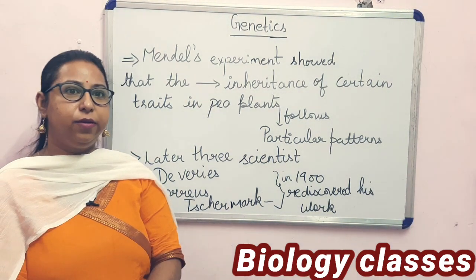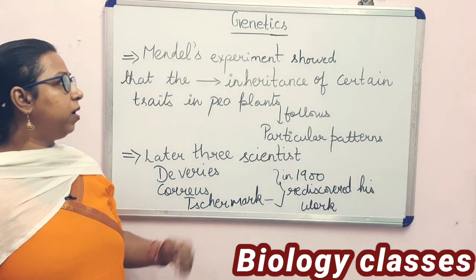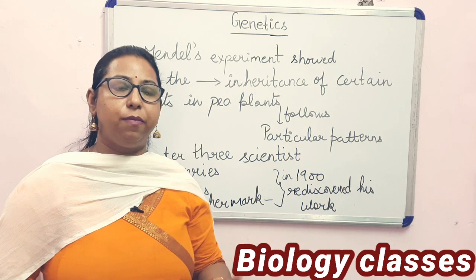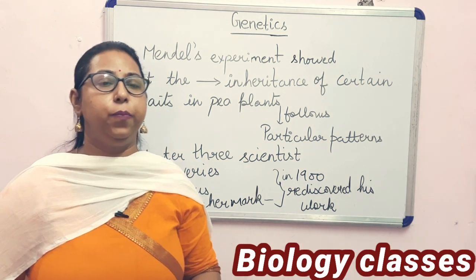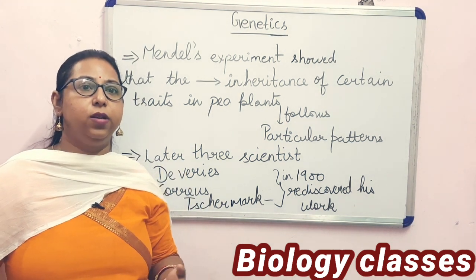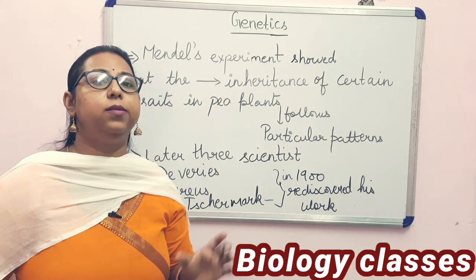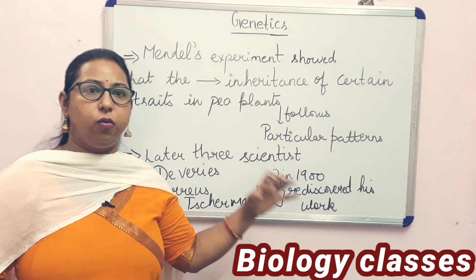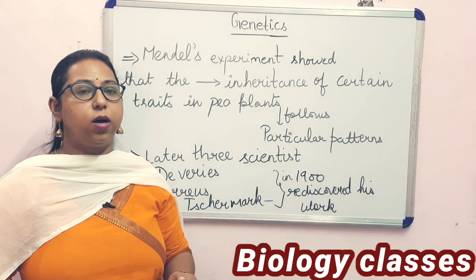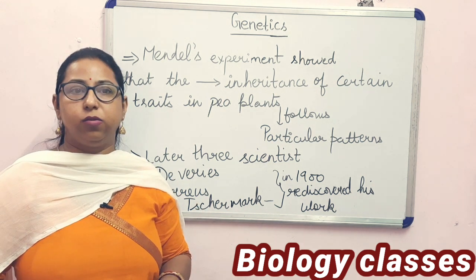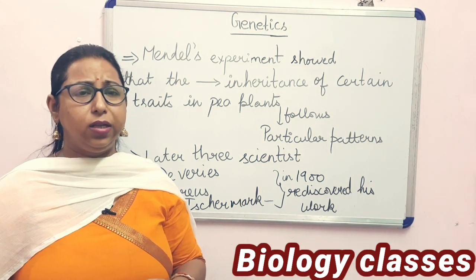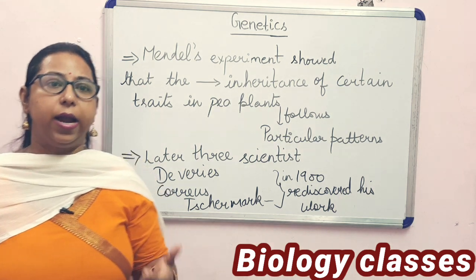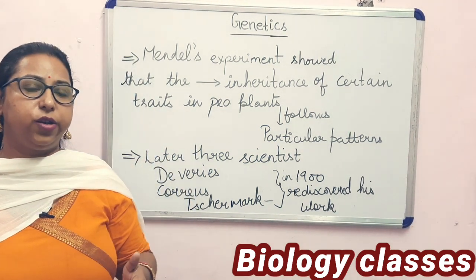Mendel's experiments showed that the inheritance of certain traits in the pea plant follows particular patterns. His ideas were published in 1866 by a branch society publication. However, his work was still unrecognized because that society was not well known at the time. Gradually, his work remained unknown throughout his lifetime, and it was not noticed by others until 1900, when Mendel finally got recognition.